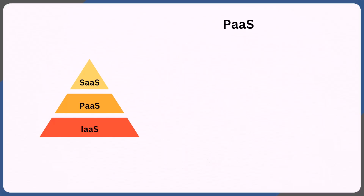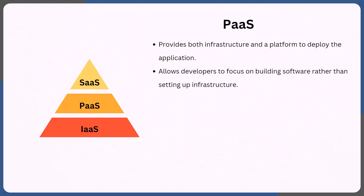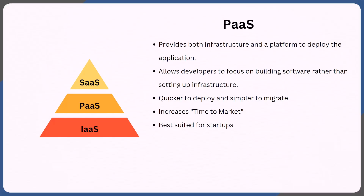Then we have PaaS — platform as a service. It provides both infrastructure and a platform to deploy the application. It allows developers to stay focused on building the software rather than setting up the infrastructure. Since you're least bothered about the underlying infrastructure, it's relatively quicker to deploy or migrate your application from on-premise. It increases time to market, because you don't have to spend time on creation of infrastructure and the software stack. It is best suited for startups who cannot afford on-premise infrastructure and want to scale fast without managing it. Examples of PaaS would be Elastic Beanstalk and Heroku — they both offer a ready-to-use environment that allows you to deploy your application fast.